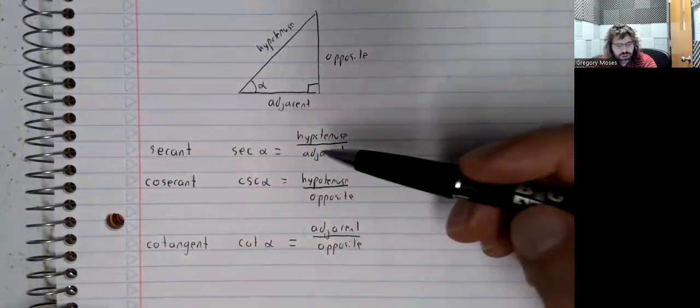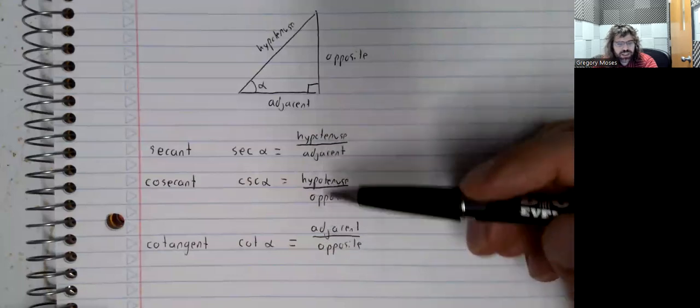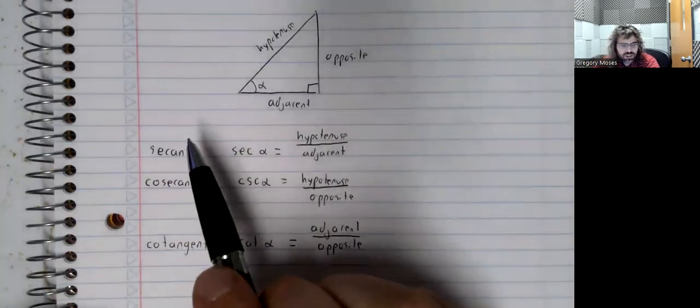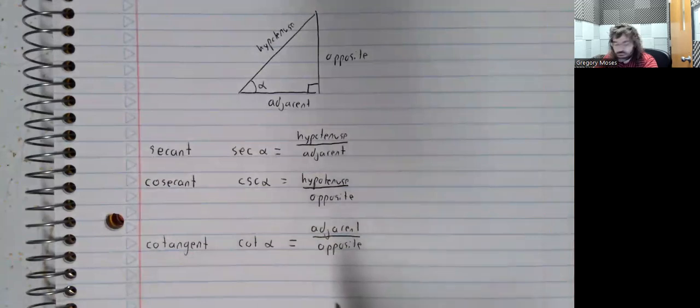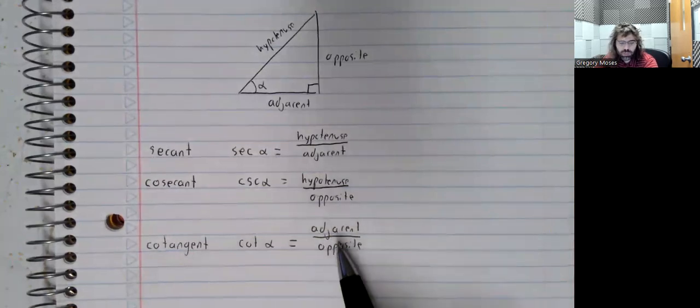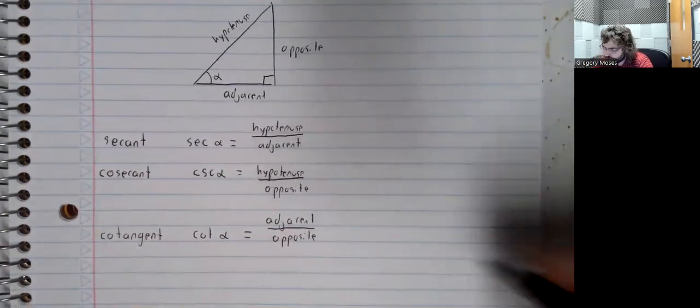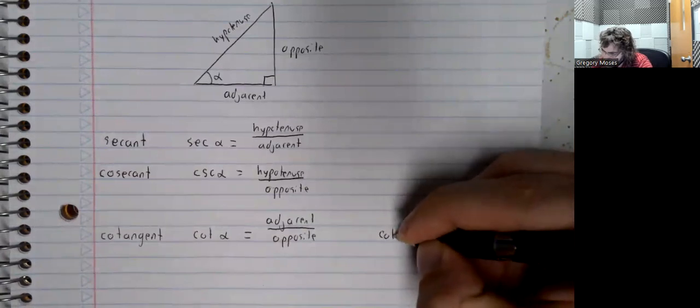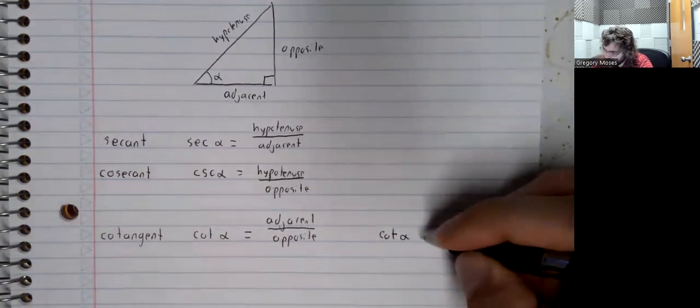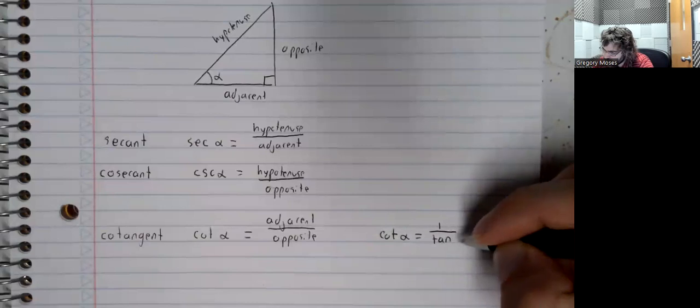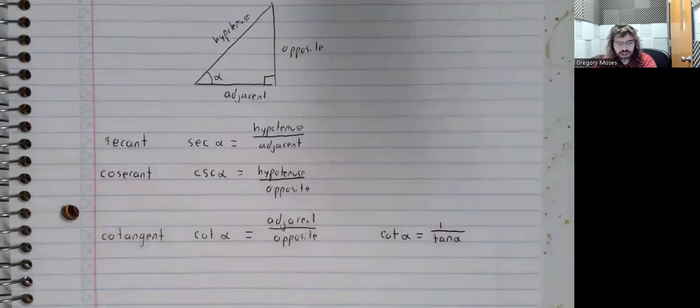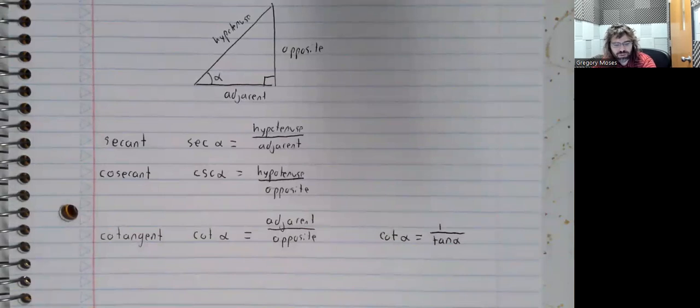However, this is not the traditional way of memorizing the secant, the cosecant, and the cotangent. The tangent is the opposite over the adjacent. So the tangent and the cotangent are reciprocals of one another. And what that means is the cotangent of alpha is one divided by the tangent of alpha.